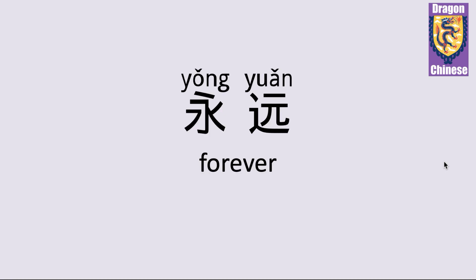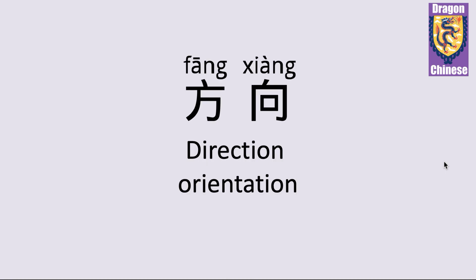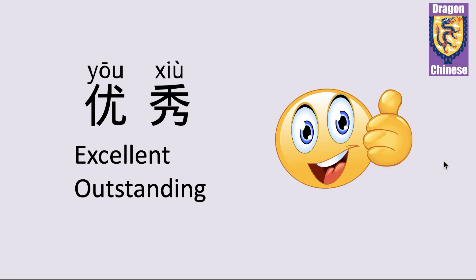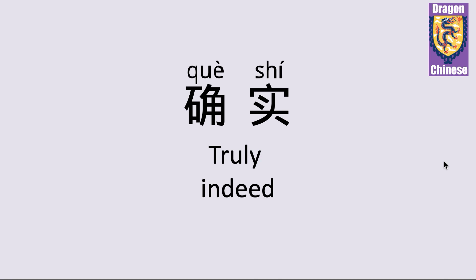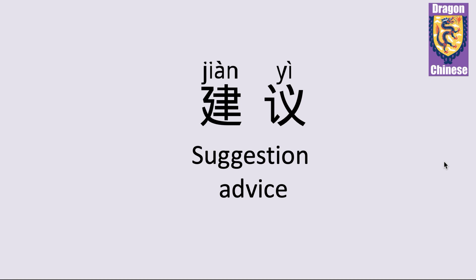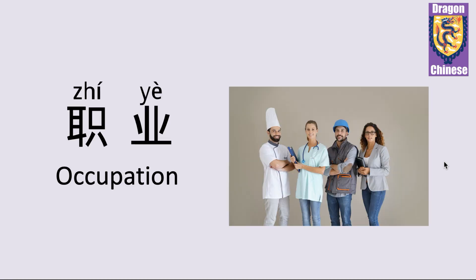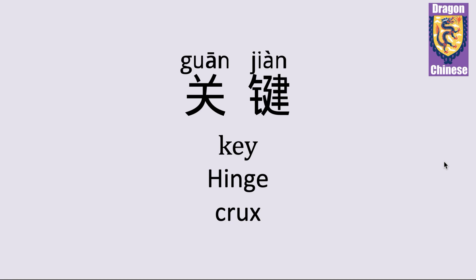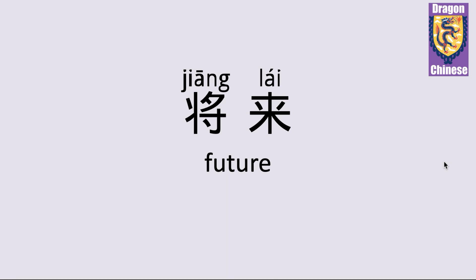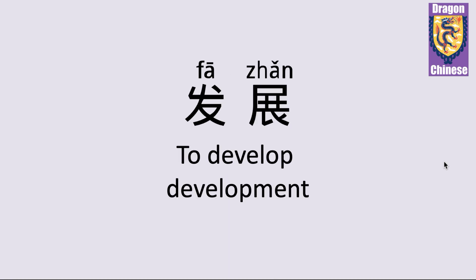妈妈 — mom; more colloquial. 不过 — but, yet. 永远 — forever. 方向 — direction, orientation. 优秀 — excellent, outstanding. 确实 — truly, indeed. 建议 — suggestion, advice. 职业 — occupation.